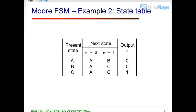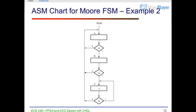In the Moore FSM example, input W equals 1, output Z, states A, B, C. EKI-448, FPGA and ASIC Design with VHDL. ASM chart for Moore FSM, Example 2.